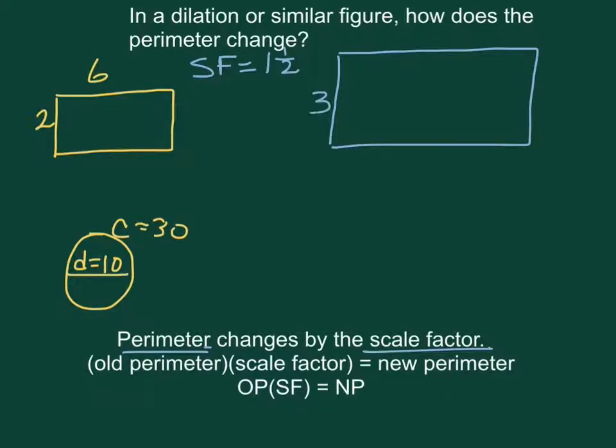So 2 times 1 and a half is 3, 6 times 1 and a half is 9. Label all of your sides of your figures.